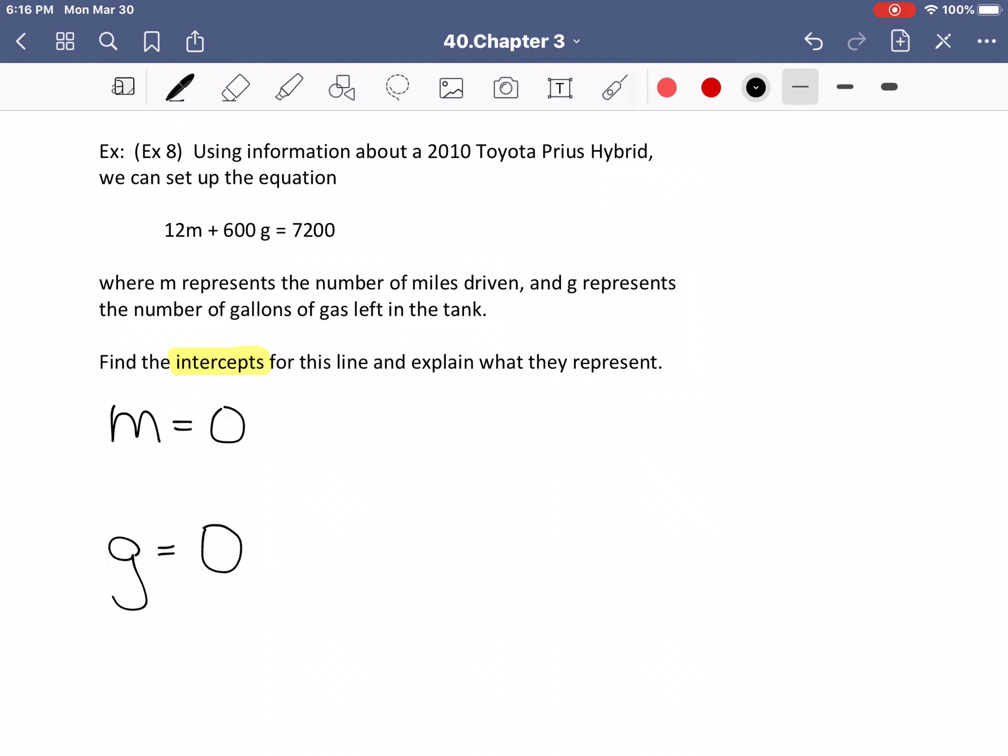So m equals zero is the number of miles driven, so this will be that you haven't driven any miles yet. I will have 12 times zero plus 600g equals 7200. Now 12 times zero is zero, so we get zero plus 600g equals 7200.